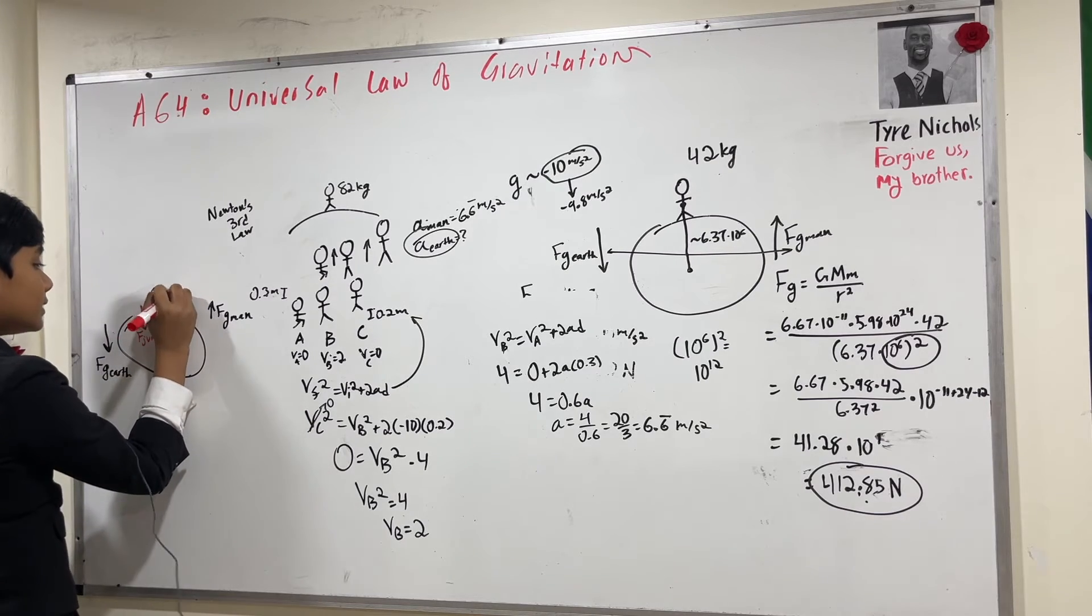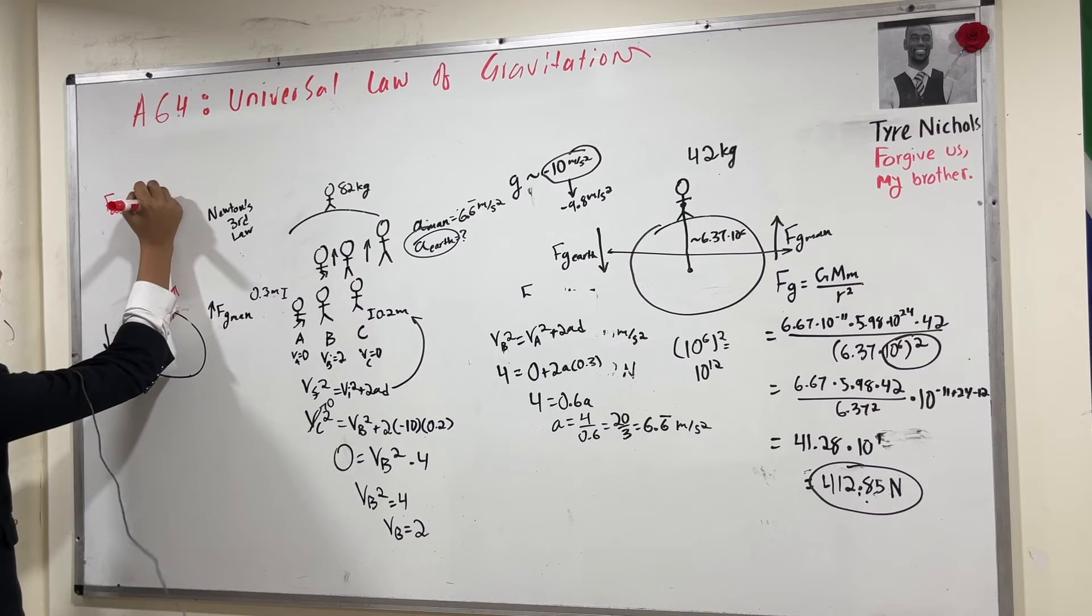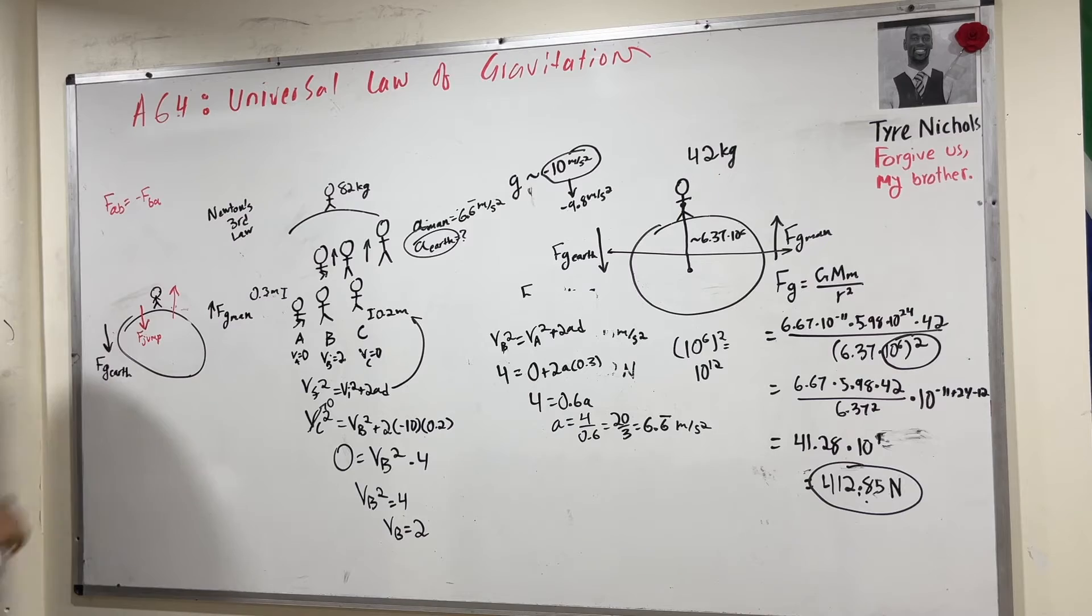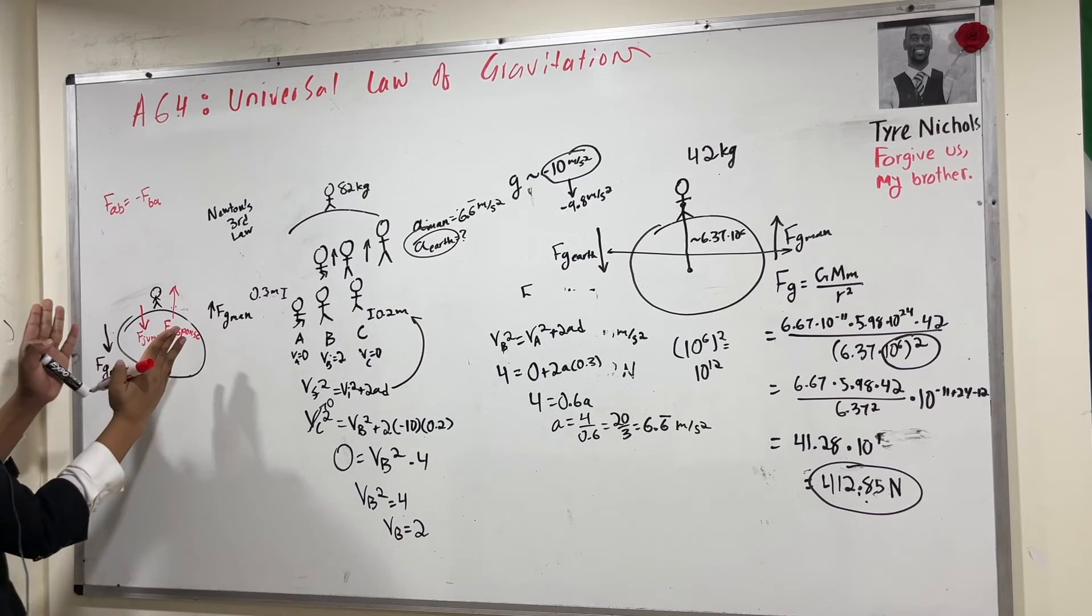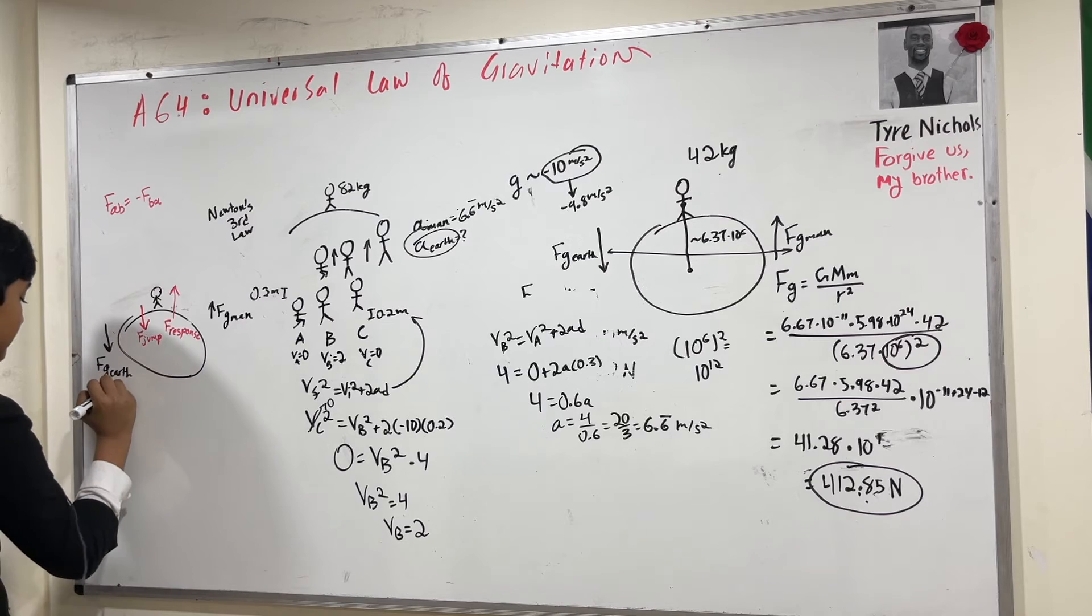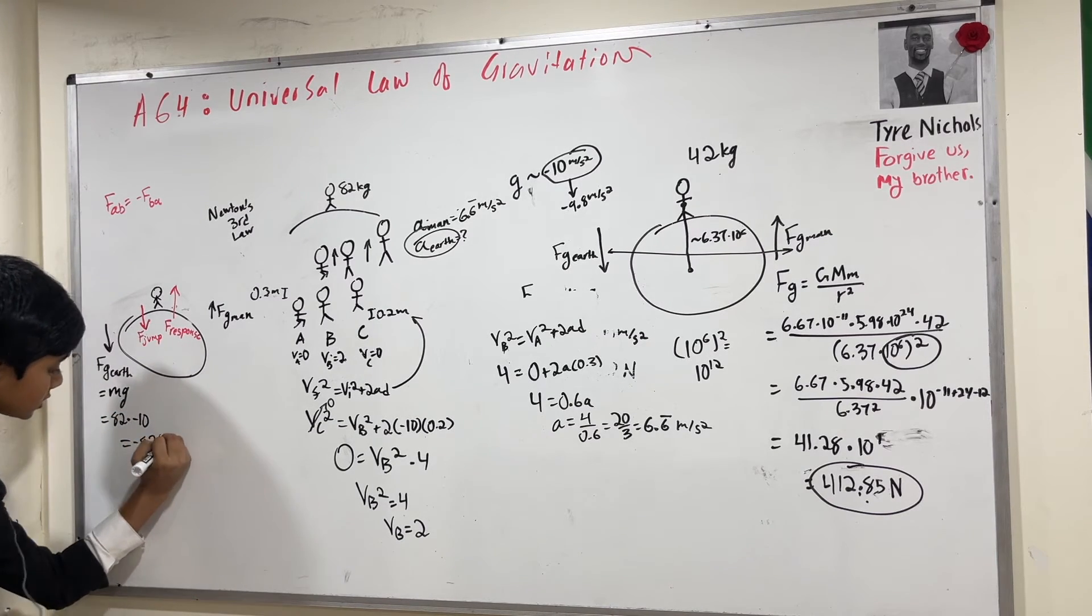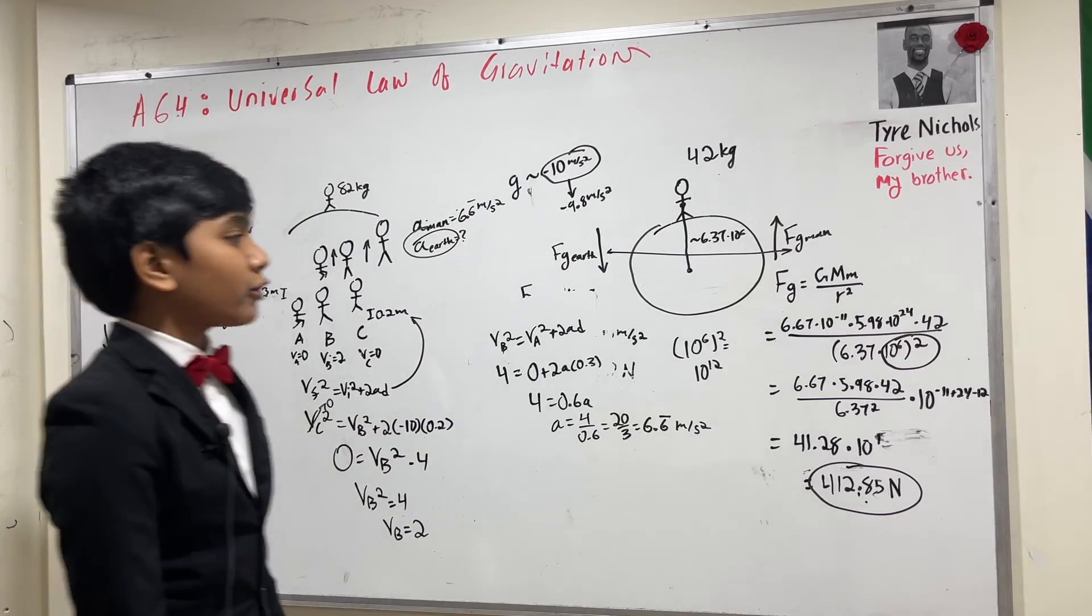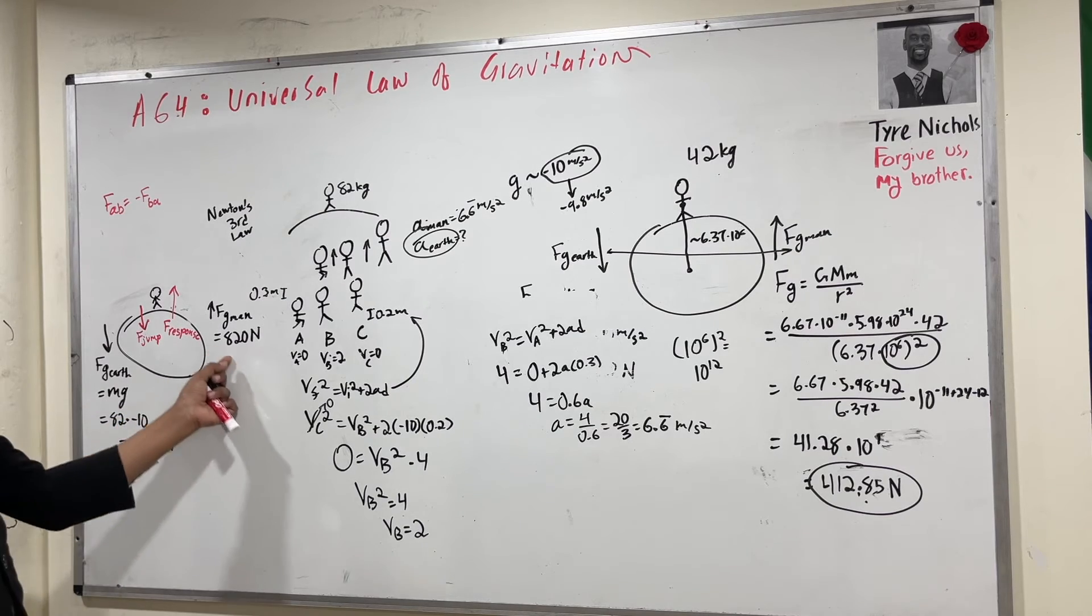And then this is the force of the earth's response, which pushes him up, which is basically the meaning of FAB equals minus FBA. In this case, it's F man earth equals minus F earth man. So this is the force of the earth's response, which has to be equivalent in magnitude, but as you can see, opposite in direction. So now, what is FG of the earth? Well, pretty simple to find. FG of the earth is simple to find, as it's basically just mg. So that is going to be 82 times our g of minus 10, which is minus 820 newtons. And we know from the first problem that FG man is going to be the same thing, but obviously opposite in direction.